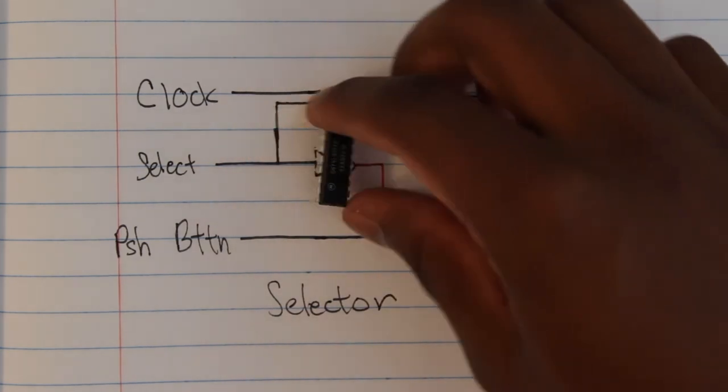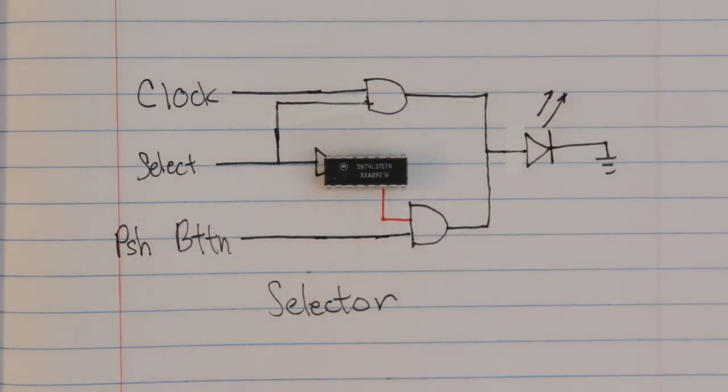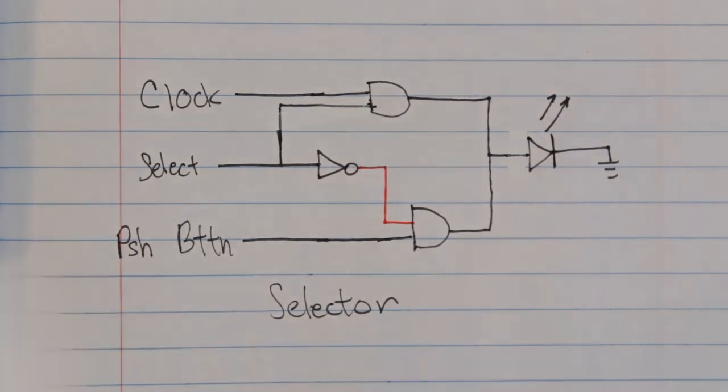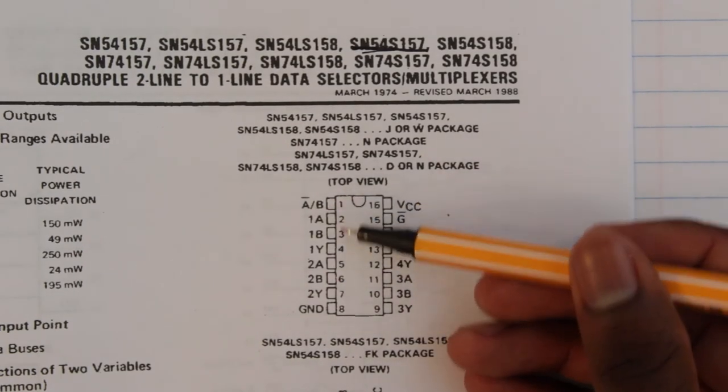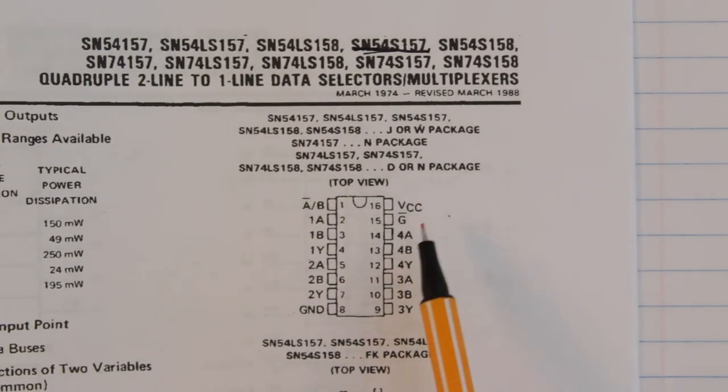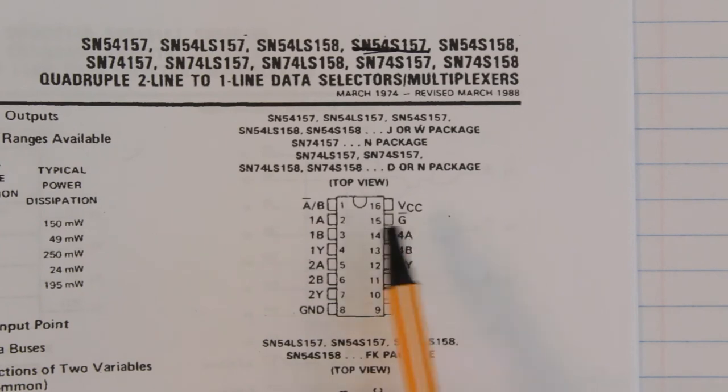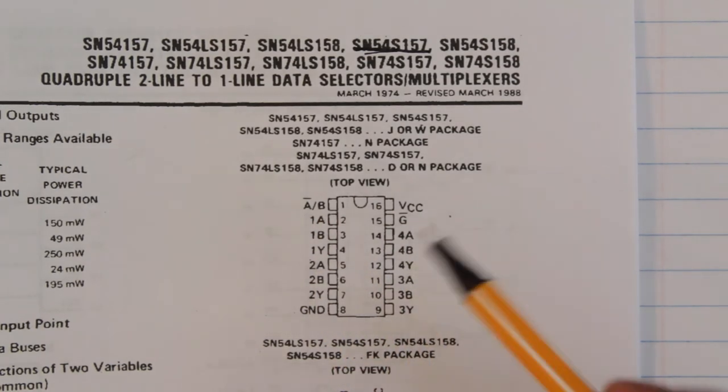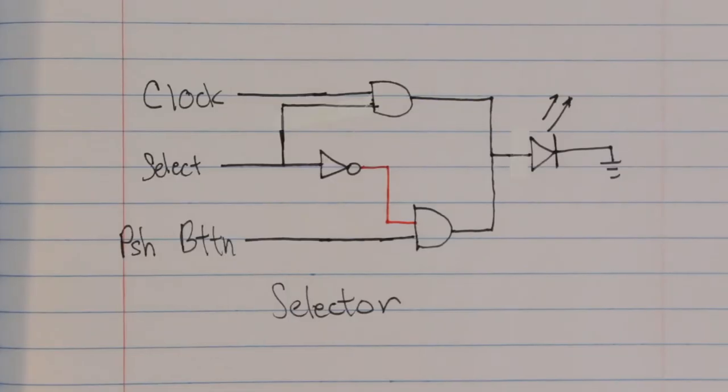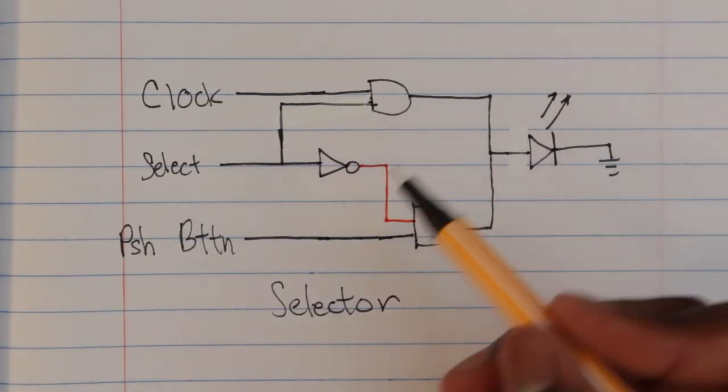Now we can get the datasheet for this IC and figure out all the information we need, like the pinout which we can see for this particular chip here. It's important to remember to tie pin 15 or G low so that the chip is enabled.